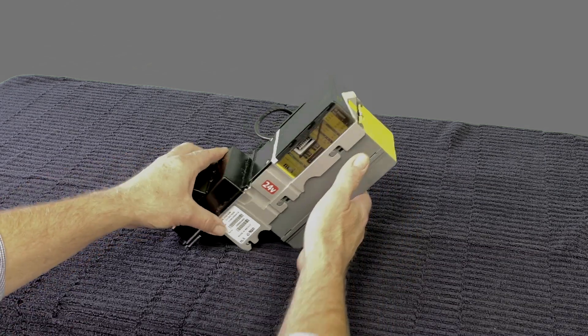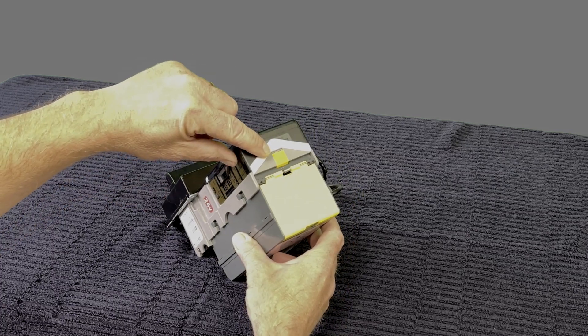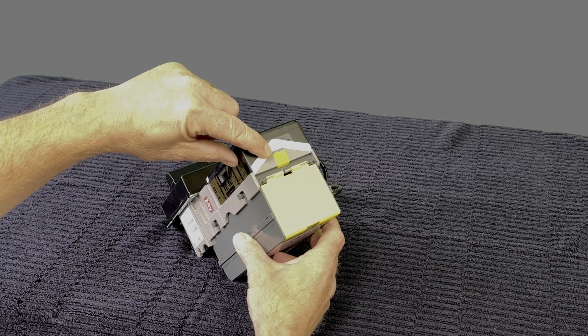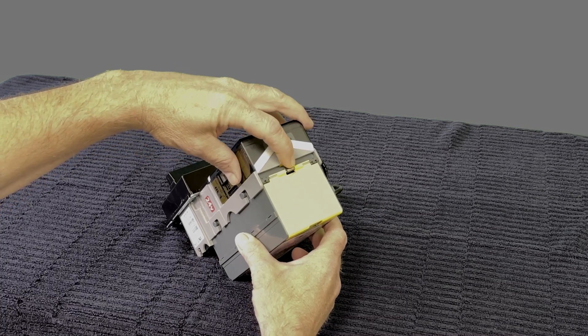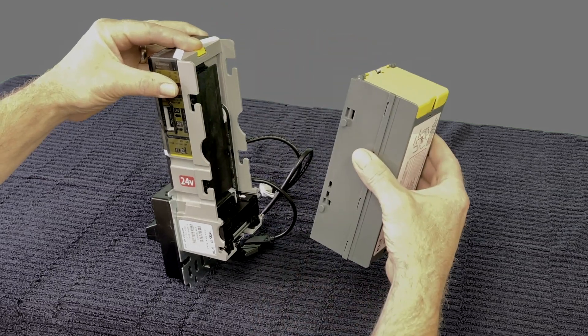Remove the billbox by pushing in on the yellow or blue clip, depending on validator model, located at the top of the validator. Push up and then pull back on the billbox to remove from validator.